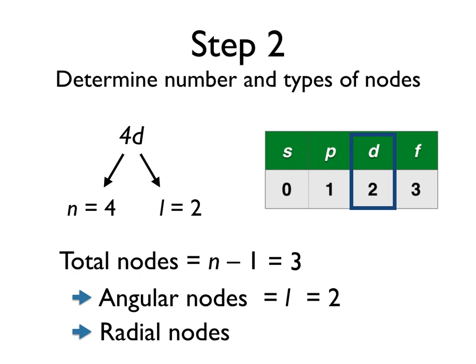Since there are three total nodes and two angular nodes, that means our radial nodes have to be what's left over, or n minus l minus 1, or 1.